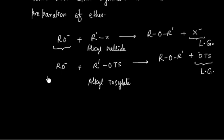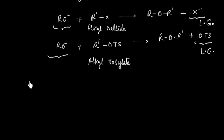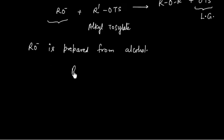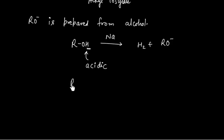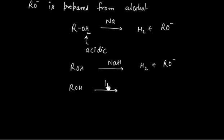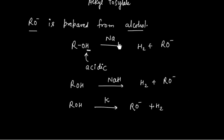The alkoxide ion RO⁻ is generally prepared from alcohol. When alcohol reacts with sodium, the hydroxyl hydrogen is acidic, so it releases hydrogen gas and forms the alkoxide ion. Similarly, we can treat alcohol with sodium hydride — it will also give hydrogen gas plus alkoxide ion. This reaction can also be done in the presence of potassium, giving RO⁻ plus hydrogen gas. So RO⁻ is prepared from alcohol reacting with sodium, sodium hydride, or potassium.